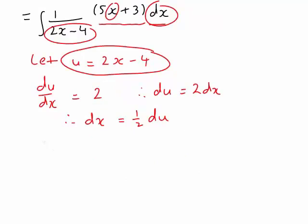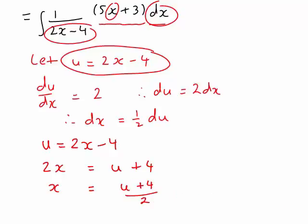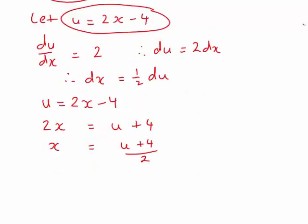Since u was equal to 2x minus 4, rearranging that, we find that 2x is equal to u plus 4, hence x is equal to u plus 4 divided by 2, or slightly more simply, x is equal to u divided by 2 plus 2.